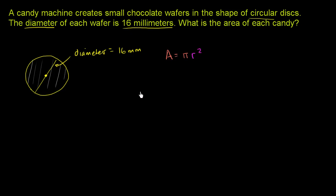And you say, well, they gave us the diameter. What is the radius? Well, you might remember the radius is half of the diameter. It's the distance from the center of the circle to the outside, to the boundary of the circle. So it would be this distance right over here, which is exactly half of the diameter. So it would be 8 millimeters.